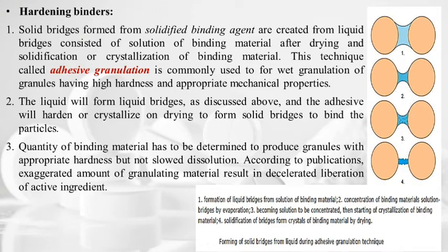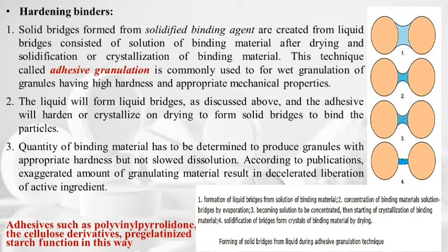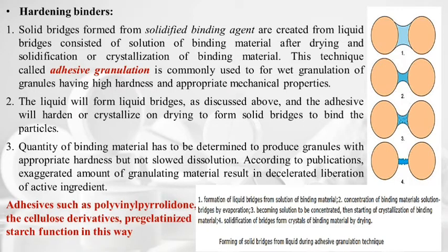The quantity of binding material must be determined to produce granules with appropriate hardness without slowing dissolution. Excessive granulating material results in decelerated liberation of the active ingredient. Adhesives such as polyvinylpyrrolidone, cellulose derivatives, and pre-gelatinized starch function in this way.